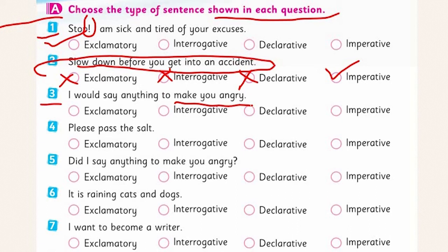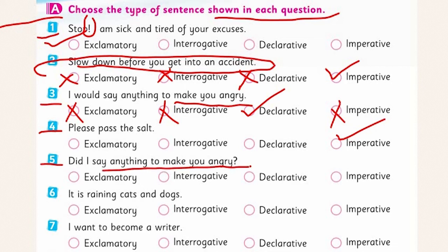The third sentence — 'I would say anything to make you angry' — is not exclamatory, not interrogative, not imperative. It is a declaration about a feeling, so it is a declarative sentence. Look at the fourth one: 'Please pass the salt.' It is imperative — there is no exclamation mark or question mark, and it is making a request. Look at the fifth one: 'Did I say anything to make you angry?' We have a question mark — it is clearly an interrogative sentence.